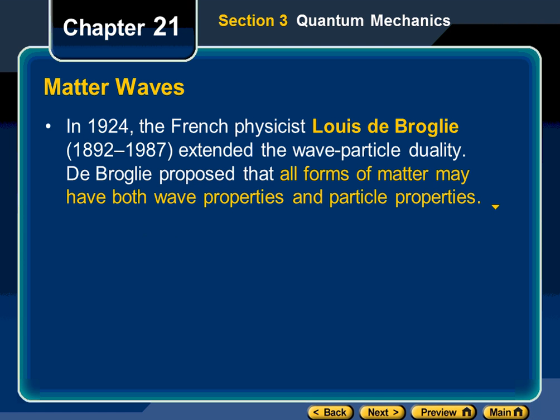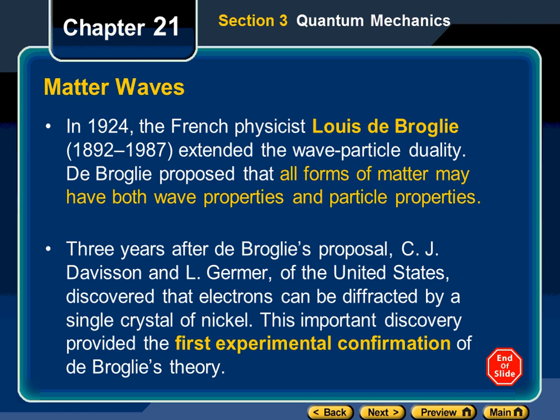The French physicist Louis de Broglie figured out: if electromagnetic waves have wave-particle duality, what about all forms of matter? Maybe they have both wave properties and particle properties. Originally, particles and waves were considered mutually exclusive. Then light was found to overlap. De Broglie proposed that all naturally occurring things have dual nature. Davisson and Germer from the U.S. discovered that electrons can be diffracted by a single crystal of nickel — the first experimental confirmation of de Broglie's theory.